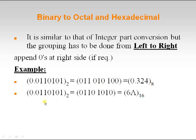To convert the same binary fractional to hexadecimal, group 4 bits: 0110 and 1010. Represent them in hexadecimal form. This is how we convert a given binary fractional into octal and hexadecimal.